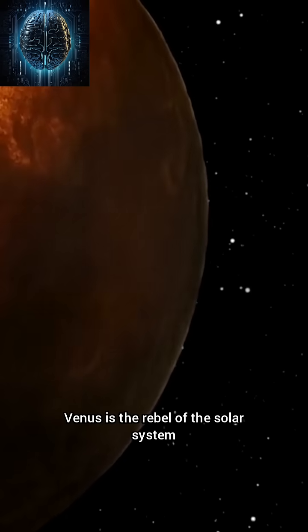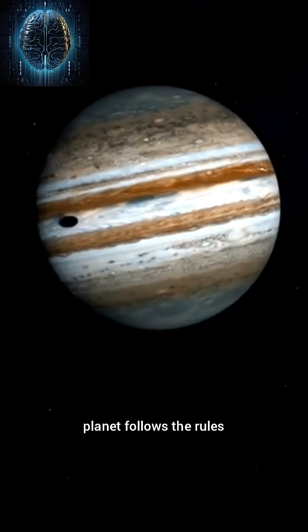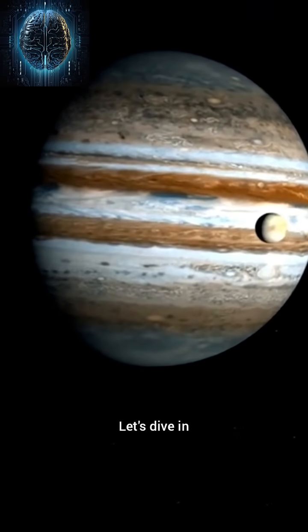Venus is the rebel of the solar system, spinning backward while almost every other planet follows the rules. But what made this planetary oddball so unique? Let's dive in.